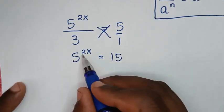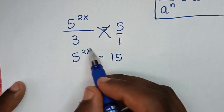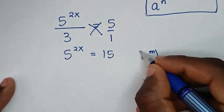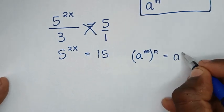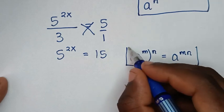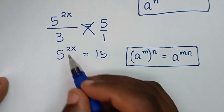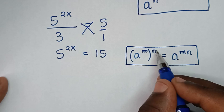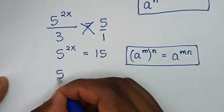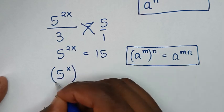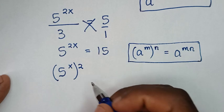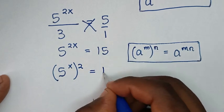From here, we rewrite 5 power of 2x as a square. We apply the exponential rule: a power of m, bracket power of n, equals a power of m times n. So 5 power of 2x becomes 5 power of x inside the bracket, raised to the power of 2 outside the bracket, because x times 2 gives power of 2x. This equals 15.